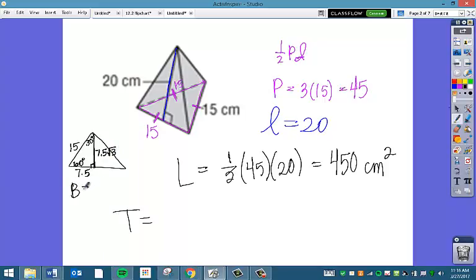The area of the base is the area of the triangle. The base of my triangle is 15. The height of my triangle is 7.5 root 3. And then I'm going to divide that by 2. Base times height divided by 2. So the area of my base, plugging that into my calculator, the area of my base is 97.4278.